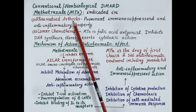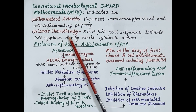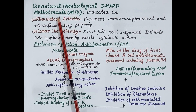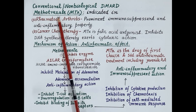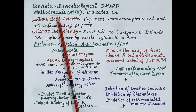Apart from its use in the management of rheumatoid arthritis, methotrexate is also used in cancer chemotherapy. Before discussing pharmacology of methotrexate, let's quickly review pathogenesis of rheumatoid arthritis disease and understand how DMARDs reduce inflammation and prevent destruction of cartilage and bone.